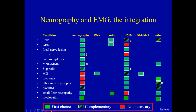Here we see a few clinical conditions and the battery of available tests. Green squares indicate the method of choice, while red squares classify a test as less important. Let's take a few examples.